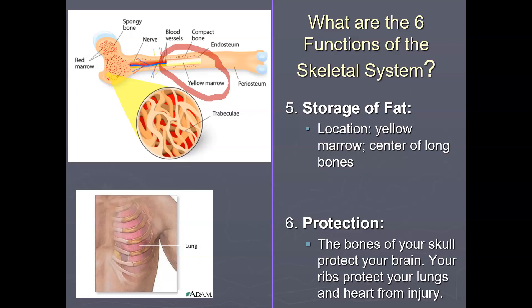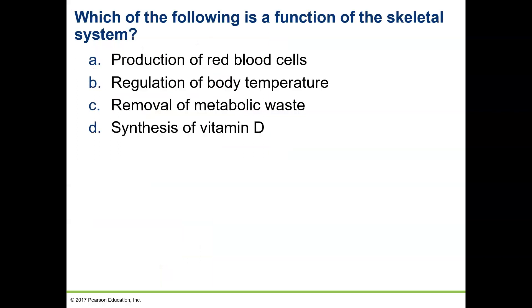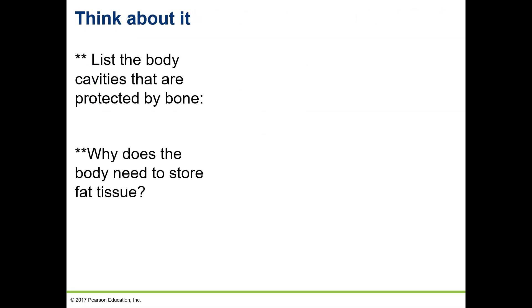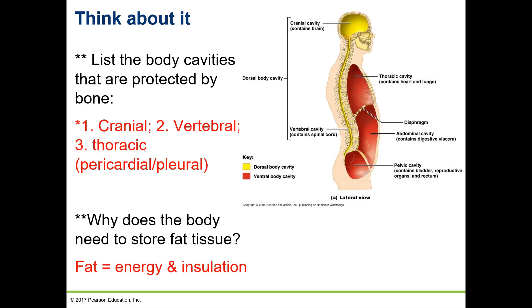The sixth function of the skeletal system is protection. The bones of your skull protect your brain; the bones of your ribs protect your lungs and heart from injury. Question: which of the following is a function of the skeletal system? List the body cavities protected by bone — the cranial cavity, the vertebral cavity which protects the spinal cord, and the thoracic cavity containing the heart and lungs surrounded by the ribs. Why does the body need to store fat? Fat is an energy source as well as insulation.